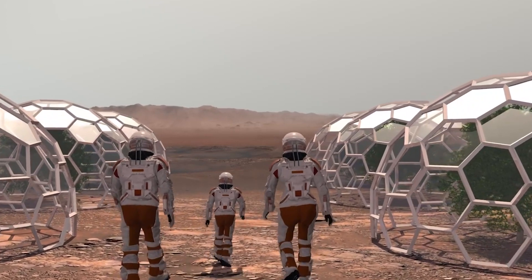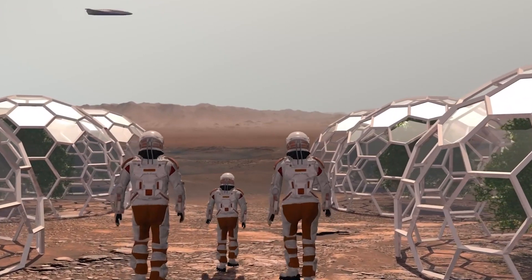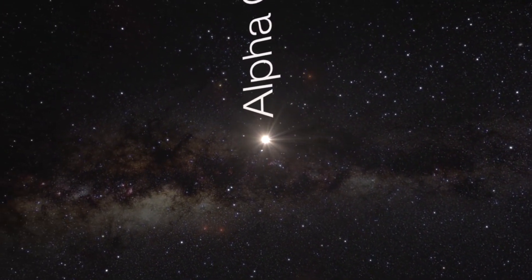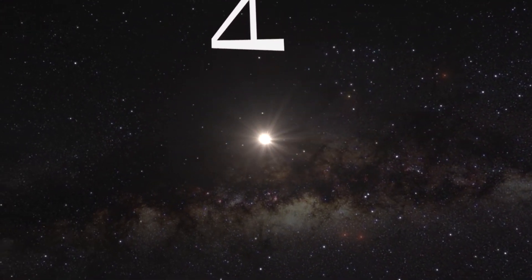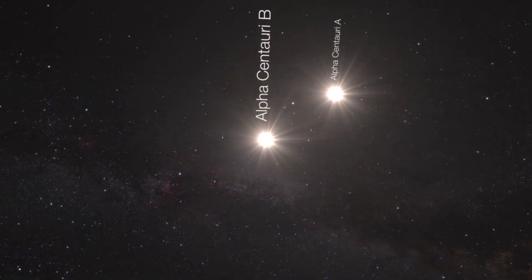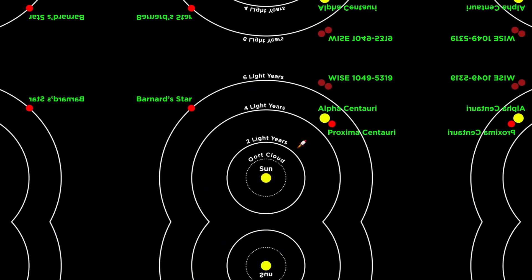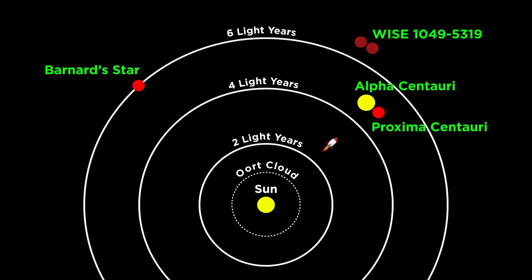Since 2016, astronomers have discovered that our neighboring solar system is none other than the Alpha Centauri. Alpha Centauri consists of two large stars, namely Alpha Centauri A and B, and this solar system hosts an exoplanet that scientists have dubbed Proxima b, given its location in the habitable zone of the red dwarf star Proxima Centauri.